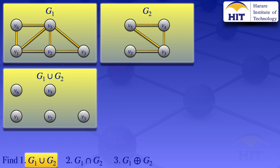Then for the edges, we have an edge between V1 and V2, an edge between V2 and V3, an edge between V3 and V5, an edge between V5 and V6, an edge between V1 and V6, an edge between V1 and V5, and lastly an edge between V2 and V5. Those are the vertices and edges in graph G1.